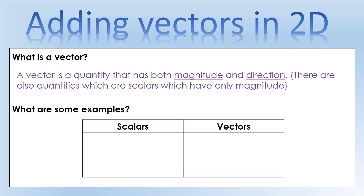So first question: what is a vector? A vector is a quantity - something we can measure - that has both magnitude and direction. There's another type of quantity called a scalar, which only has magnitude. Examples of scalars we've met before would be energy, distance, and speed. Those are all scalars - we just give them a size, so we say an object has 200 joules of energy, not 200 joules upwards or anything like that.